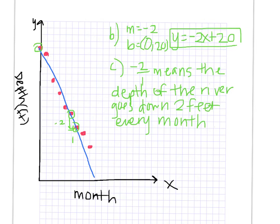We also have to make sure we do all parts of the question. They also want us to interpret the y-intercept. 0, 20 means the original or starting depth is 20 feet.